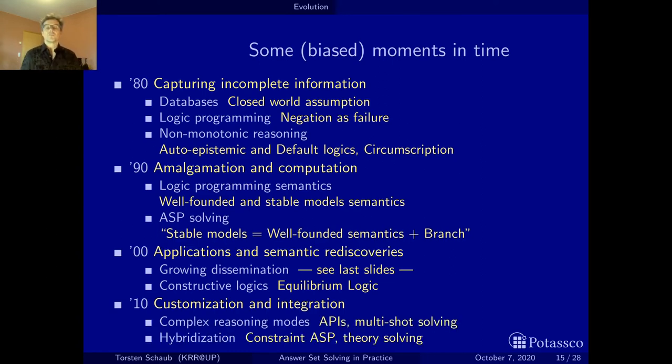ASP is now more and more applied in industry and academia. There are different reasoning modes—you can do optimization, you can intersect the models, or you can do multi-shot solving as we will see later on. There are APIs, application programming interfaces, that you can take the ASP system and embed it into another larger software environment. Hybridization allows you to combine nowadays ASP with constraint satisfaction or with other theory solving methods. You can see things are getting more and more mature.